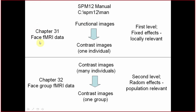The first chapter is Chapter 31: Face fMRI data — this is for the first-level analysis. The SPM manual is located in the SPM folder, subfolder 'man'. You will find it easily — open it and find Chapter 31 for the first part.